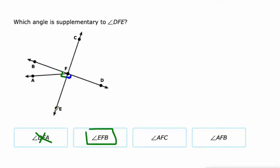So EFB. We'll check AFC as well. AFC. No, that's obtuse. AFB is acute. So just EFB.